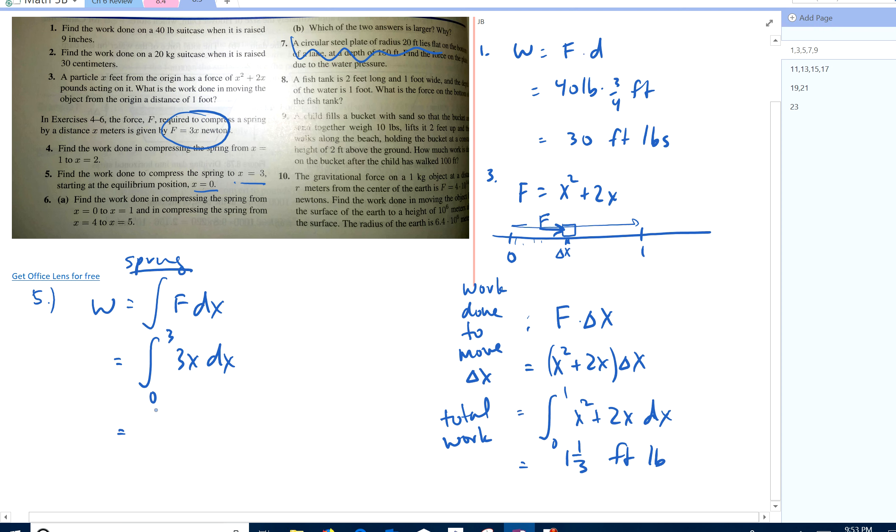And if you do that, you get 3x squared over 2 from 0 to 3, which is 27 over 2, newton meters. Newtons is your force. Distance is the meters.